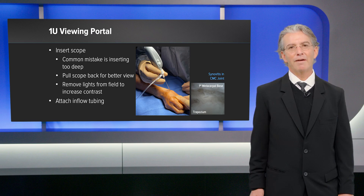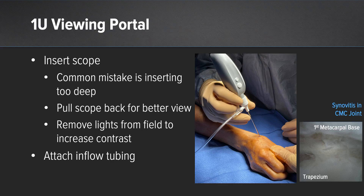Viewing of the scope can be achieved by putting the nanoscope through the 1U portal. Care is taken not to put the scope in too deep, as this is a common mistake. Gently pull back on the scope to visualize the dorsum of the CMC joint. Turn off the overhead lights in order to improve the visibility of the screen, and then attach the tubing for fluid.